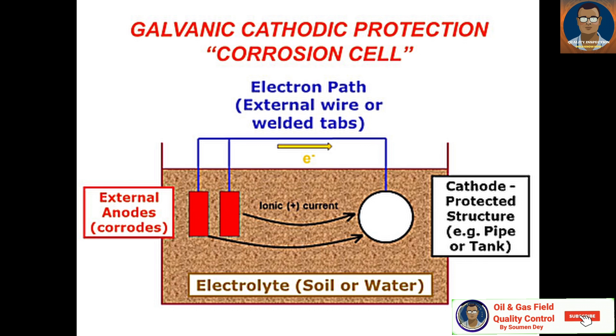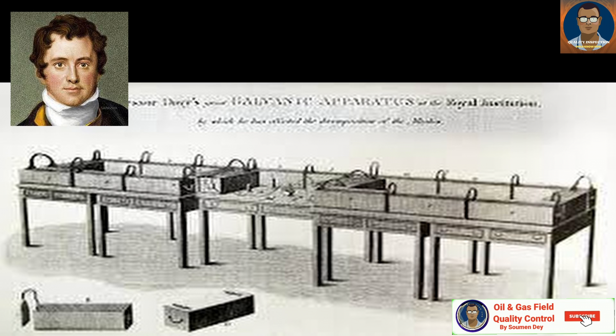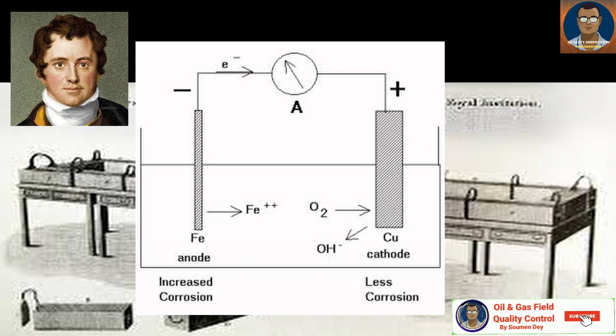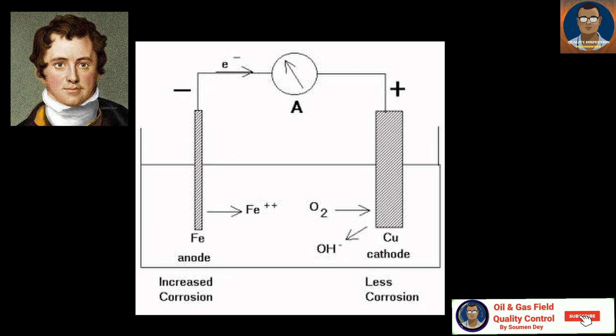Cathodic protection is a highly effective method of preventing corrosion and is used in multiple industries and environments. Its history in corrosion science really begins with Sir Humphrey Davy, who first discovered the cathodic protection principles and applied them to electrochemical corrosion. Davy's experiments led to the first use of cathodic protection in 1824, when he successfully protected a British Navy ship's copper sheeting from corrosion in seawater by using iron anodes.